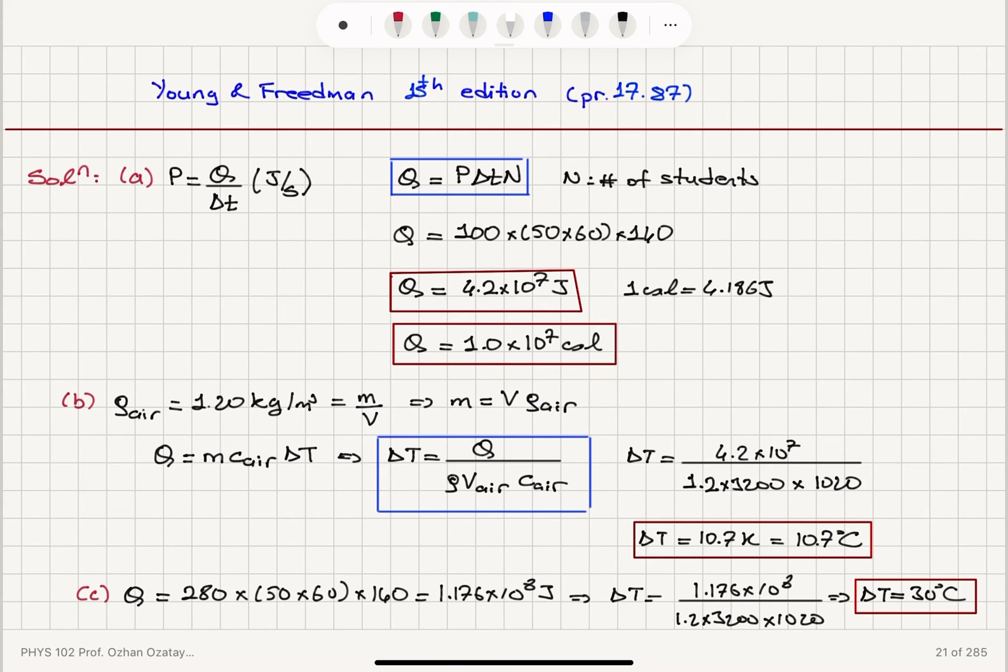For an exam, we have 280 watts power output per student. Instead of putting 100, we have to put 280. We will see that the temperature rise, because it is proportional to Q, will be 2.8 times larger, which is roughly 30 degrees Celsius.